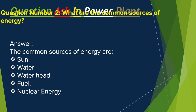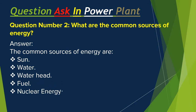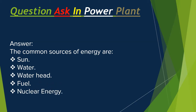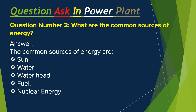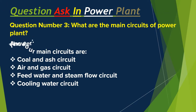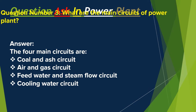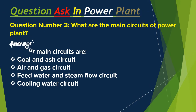Question number two: What are the common sources of energy? Answer: The common sources of energy are: sun, water head, fuel, and nuclear energy. Question number three: What are the main circuits of a power plant? Answer: The four main circuits are: coal and ash circuit, air and gas circuit, feed water and steam flow circuit, and cooling water circuit.